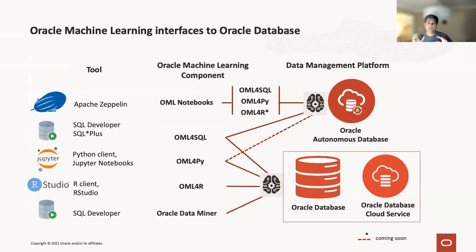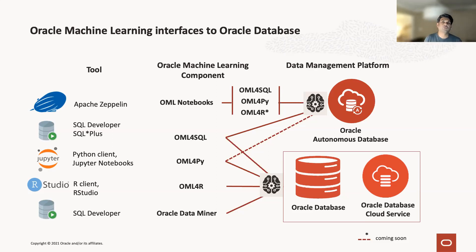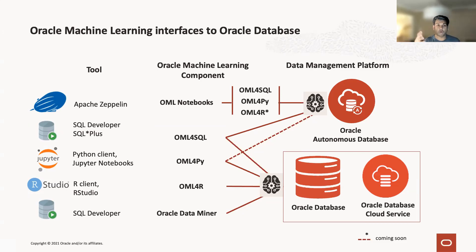There are all sorts of different user interfaces. You have Apache Zeppelin for OML notebooks where you can do OML for SQL, OML for Python. There's SQL Plus and SQL Developer where you can again do OML for SQL, OML for Python. There's R Studio where you can do OML for R. And there's a graphical user interface to build a model — Oracle Data Miner, built into the SQL Developer framework — which you can connect directly to the Oracle Autonomous Database. You can do this on-prem using your own Oracle database, but if you do this on our cloud you get the AutoML capabilities.